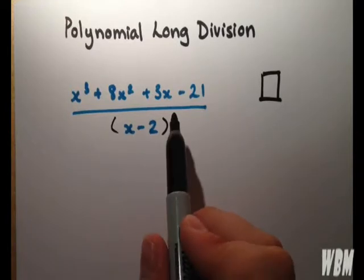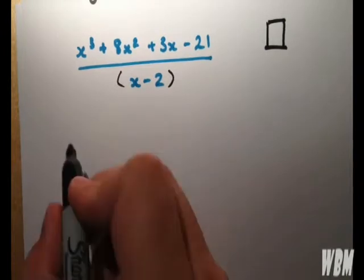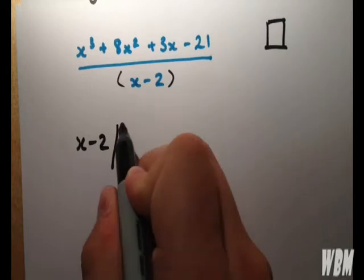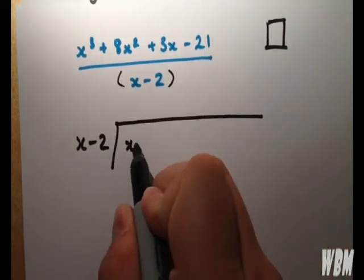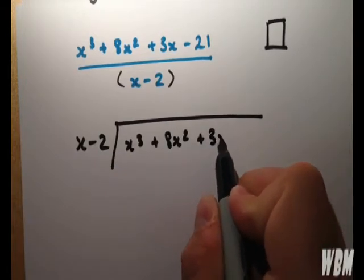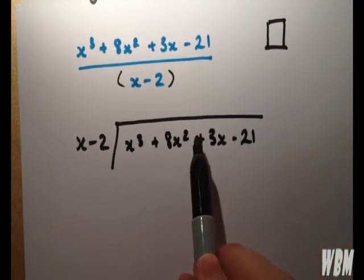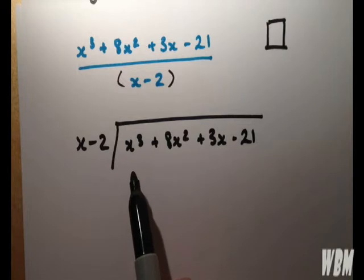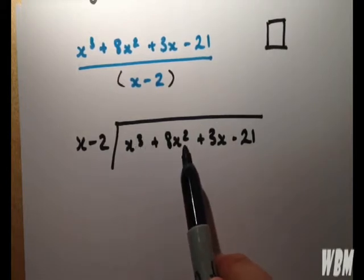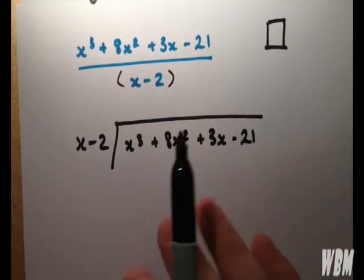So the first thing we're going to do is we're going to write it out in a standard long division way. We're fortunate here that the powers are in a descending order, so make sure your powers always are descending. We don't want x to the 2 and then x to the 7 here, because that's not how we want to go ahead with the process.